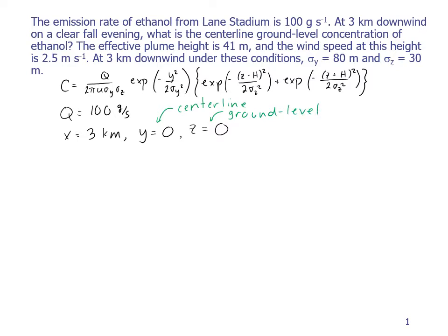The effective plume height is 41 meters. That means H is equal to 41 meters. The wind speed at this height is 2.5 meters per second. So that's our U.